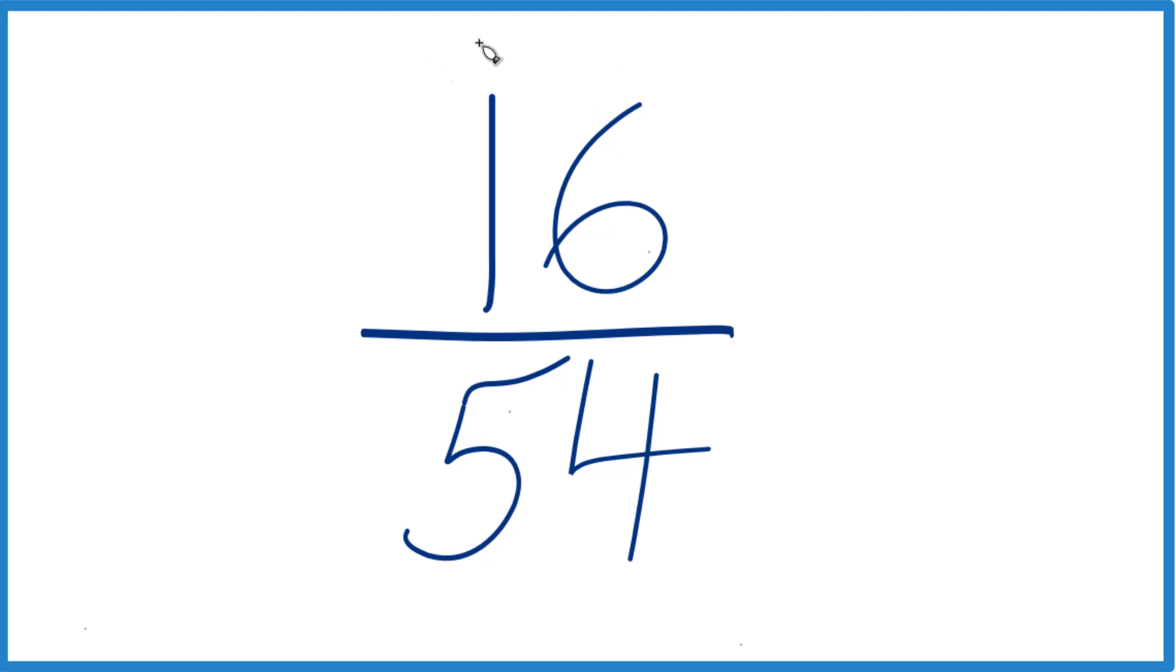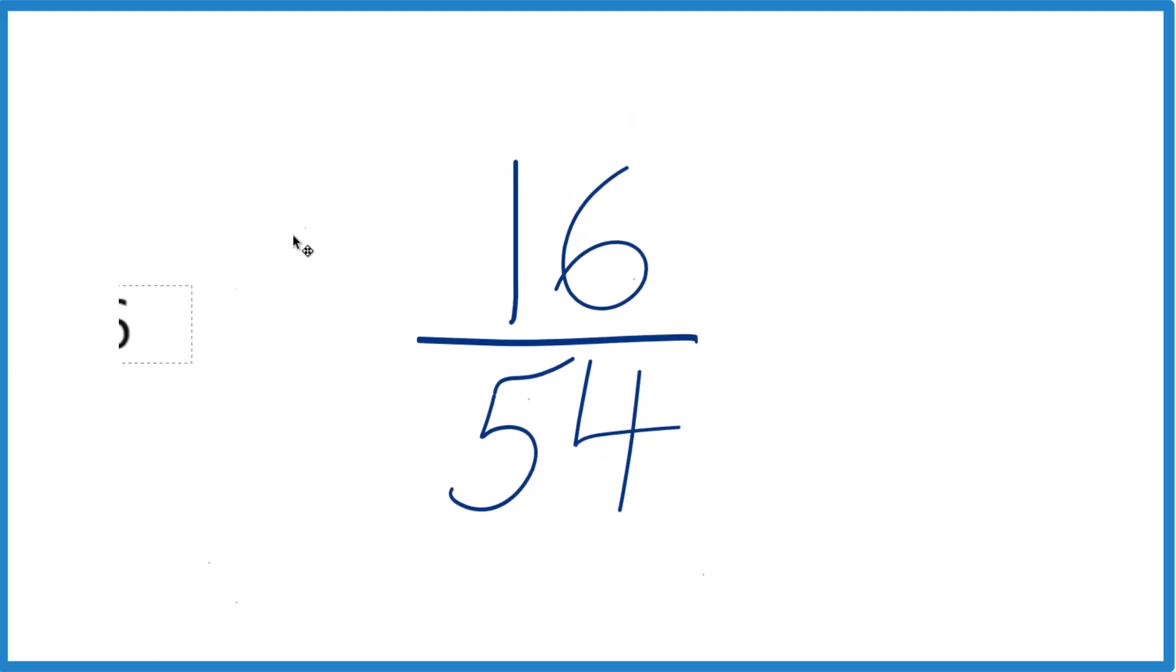So we need to look at the factors of 16 and 54, and then look at the greatest common factor. So factors of 16: we have 1 times 16, 2 times 8, and 4 times 4.